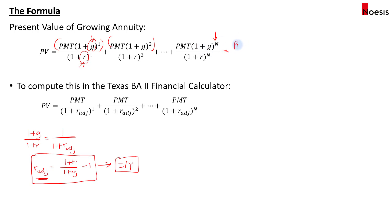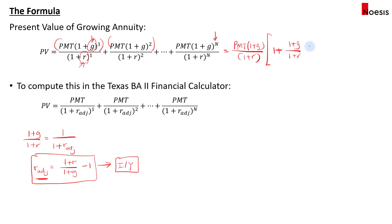We can factorize: annuity amount times (1+G)/(1+R), and then expand the series: 1 plus (1+G)/(1+R) to the power of 1, continuing until the last term, which is (1+G)/(1+R) to the power of n minus 1. In total there are N terms in this geometric progression.